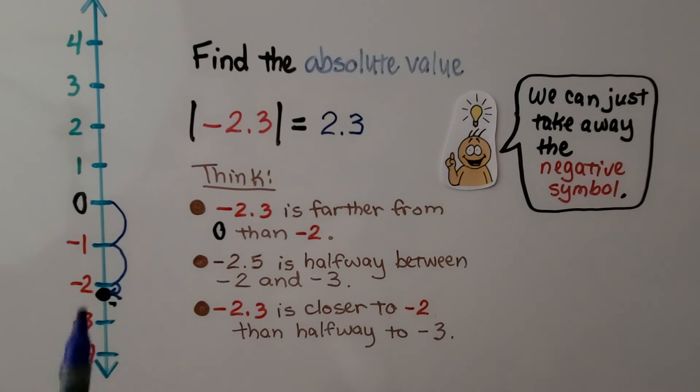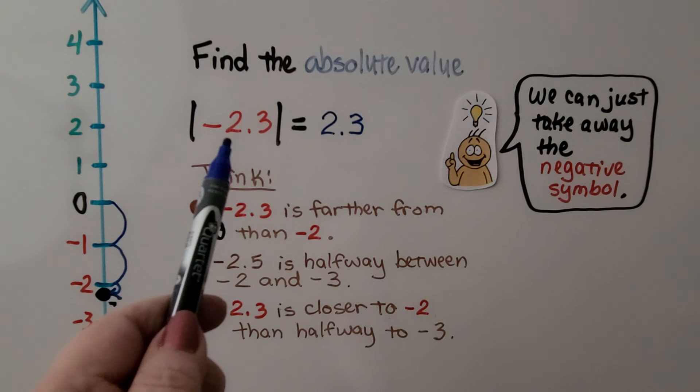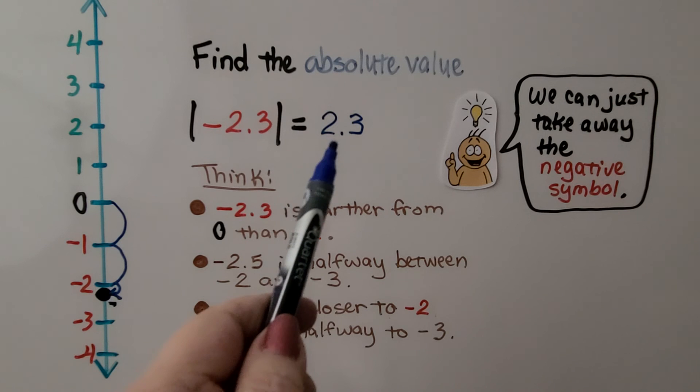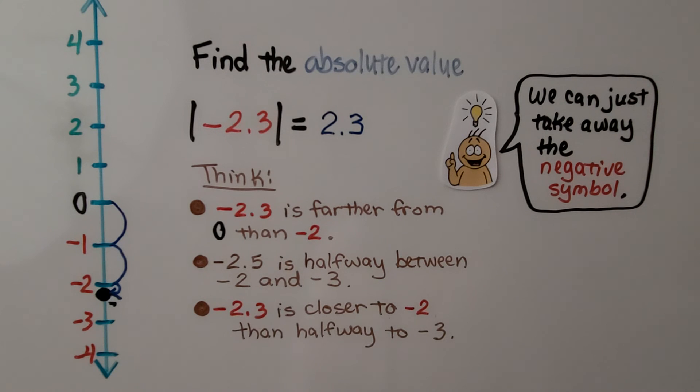If this was a positive two and three-tenths, it would still be two and three-tenths, because the absolute value is a distance and it's always a positive number.